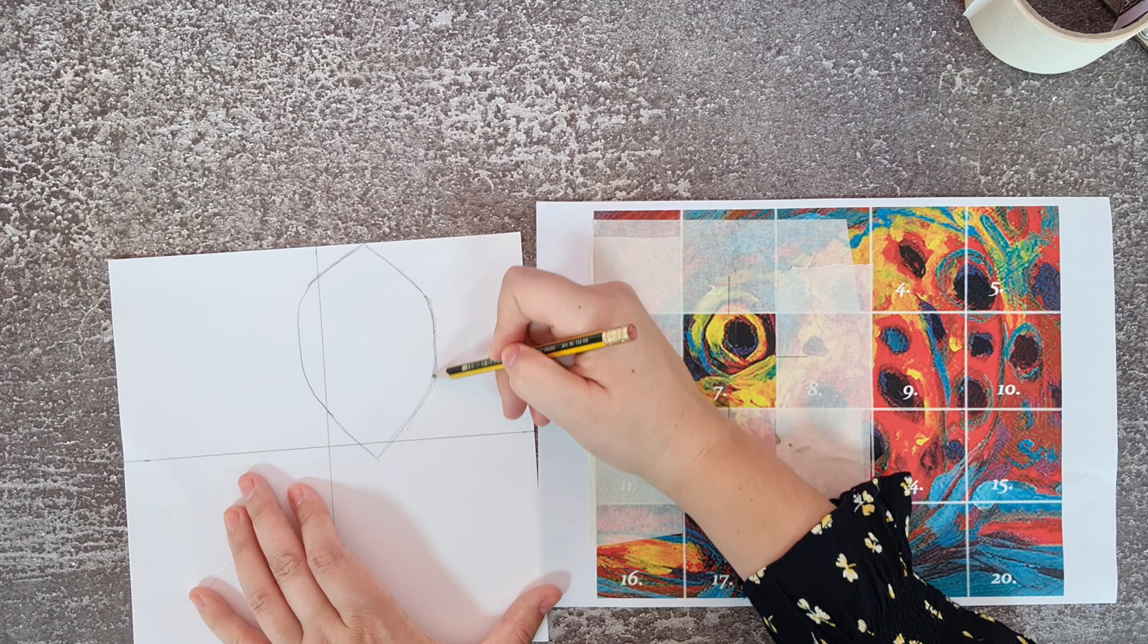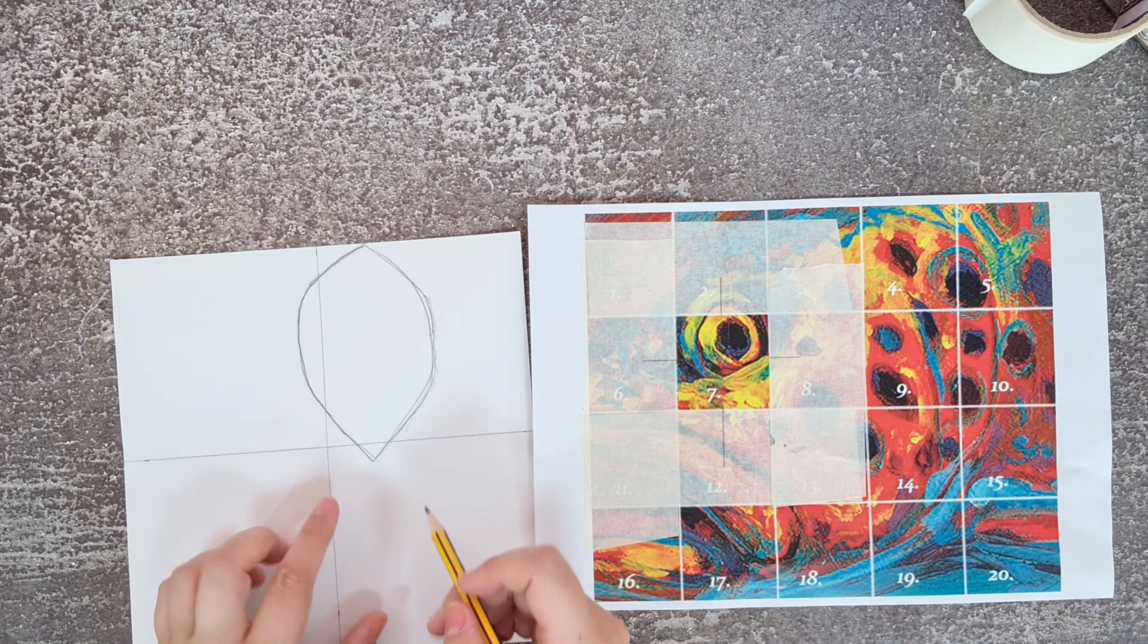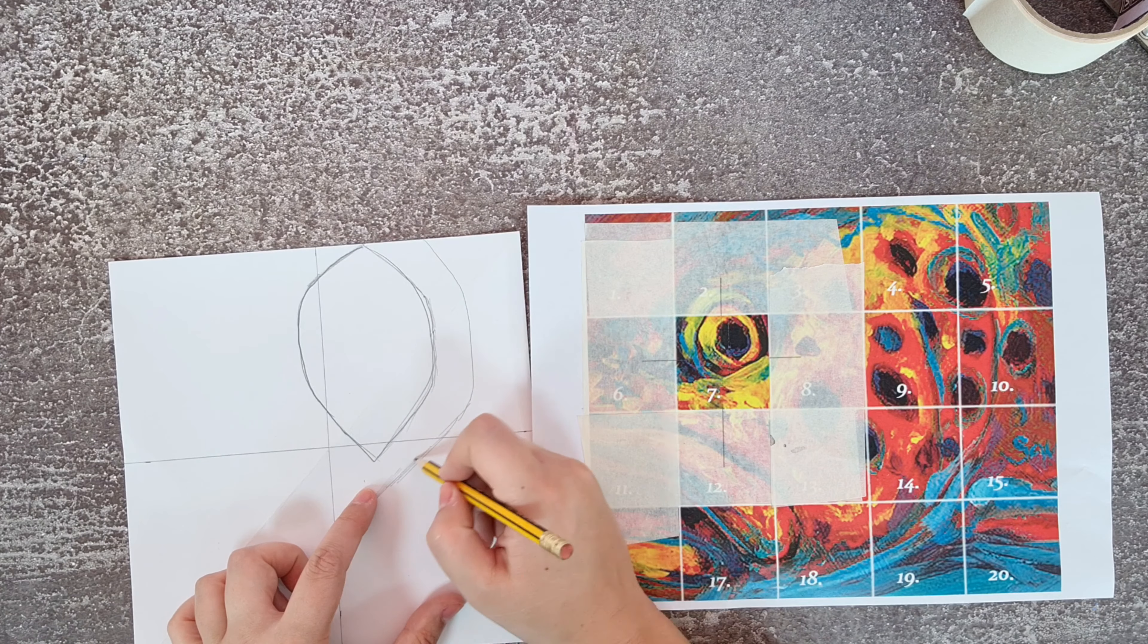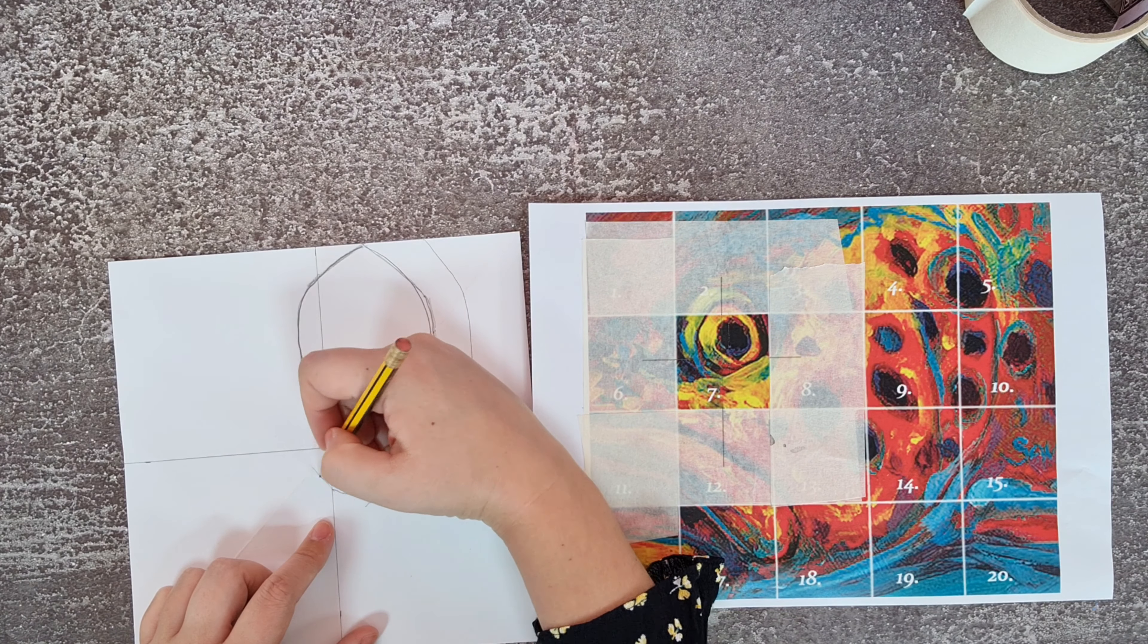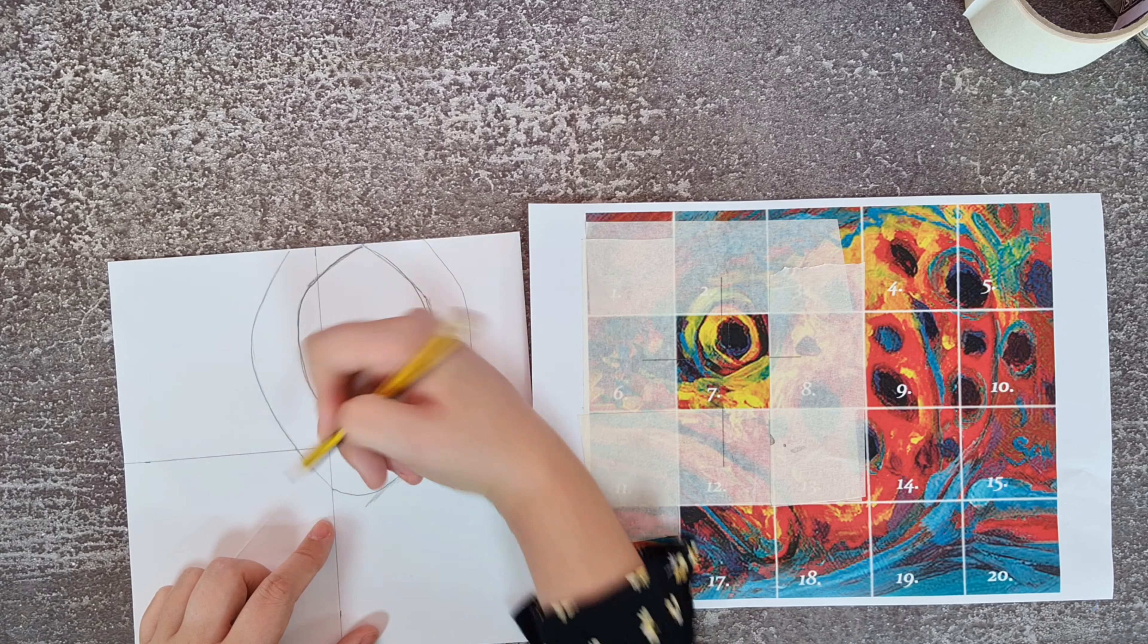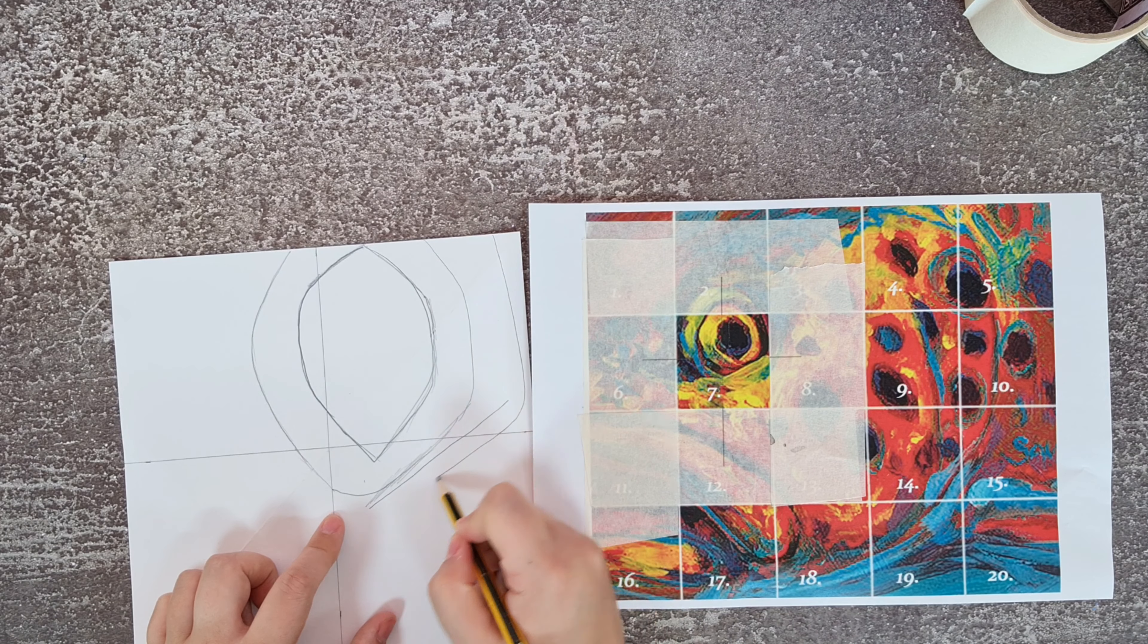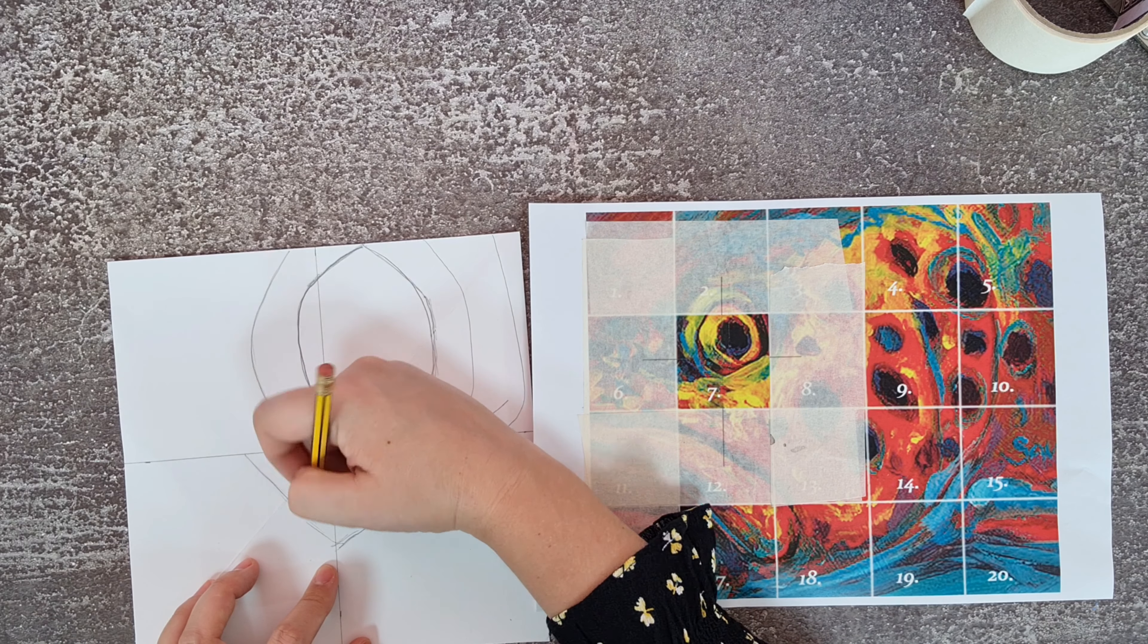Once you've drawn and sectioned off your four little grids there you're going to then draw in the shapes that you see within your specific number square. Remember, it is not this specific one that you will be doing. It is up to the teacher to assign your name with a number on this grid that you will find on Firefly.